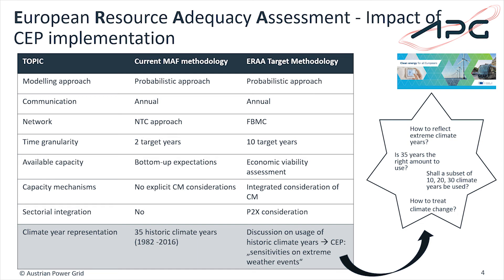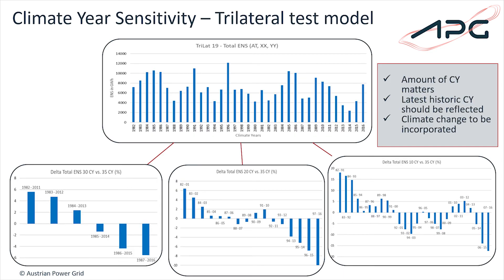What we did is we performed a test model which consists of three nodes, and basically once performed the 35 climate years, but also an assessment on 30, 20, and 10 climate years. What we see is that the selection of the years highly influences results, mainly the most recent years change the results in a positive trend direction.